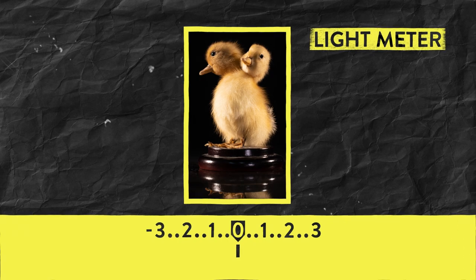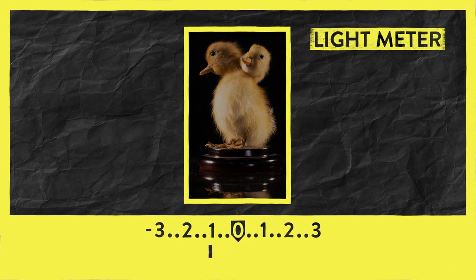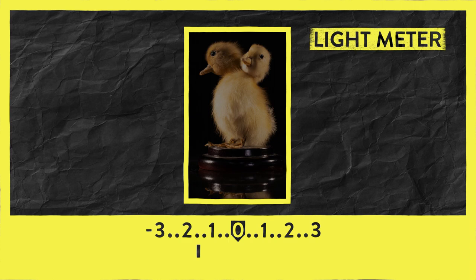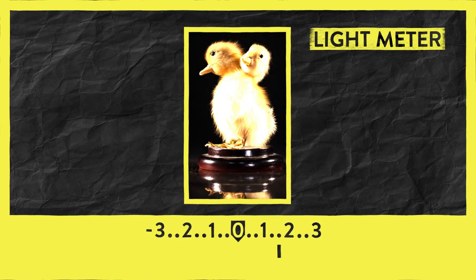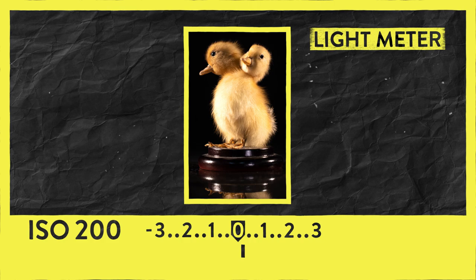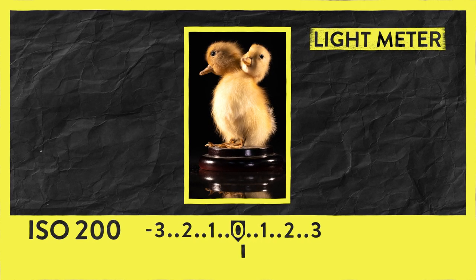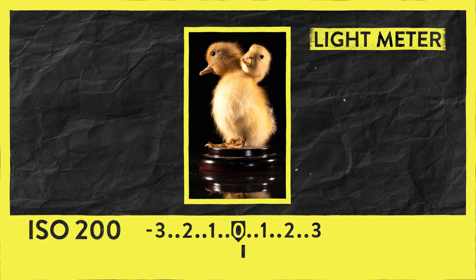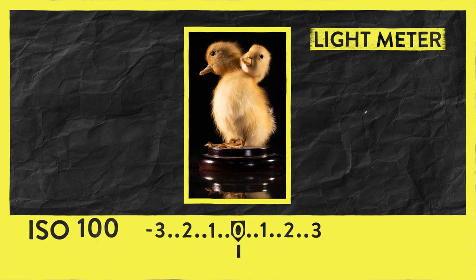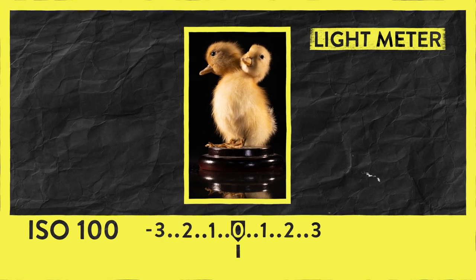Now that you know all three parts of the exposure triangle, we're going to put them together. To do that, we're going to use the in-camera light meter. This is a reflected light meter that measures the light bouncing off the subject. The light meter uses the ISO as its point of measurement — it knows how fast the sensor receives light. So at ISO 100, it knows that the sensor is not very sensitive at the moment.